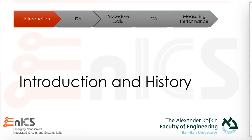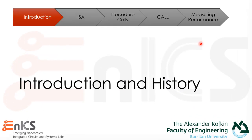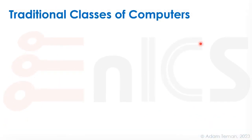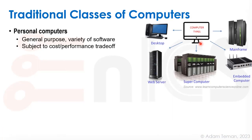Let's start with some introduction and a bit of history about the microprocessor. We'll start with traditional classes of computers. We all know our personal computers, like the computer I'm recording this lecture on. That's our desktop or our laptop. It's made for general purpose and can run a variety of software. There's a cost performance trade-off because we want as high performance as possible, but we also have to reduce the cost.